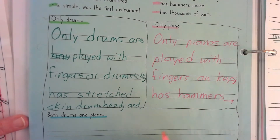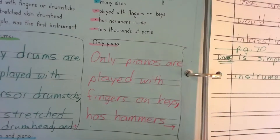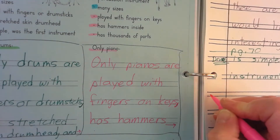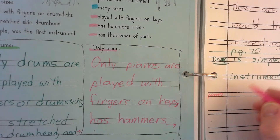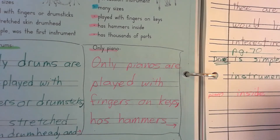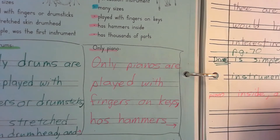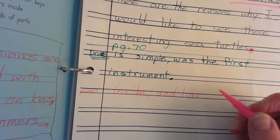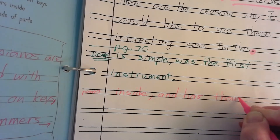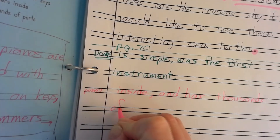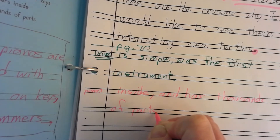I might even put an arrow to show Mrs. Langlitt that we need to go to the next page. Has hammers inside, comma, and has thousands of parts. Period.